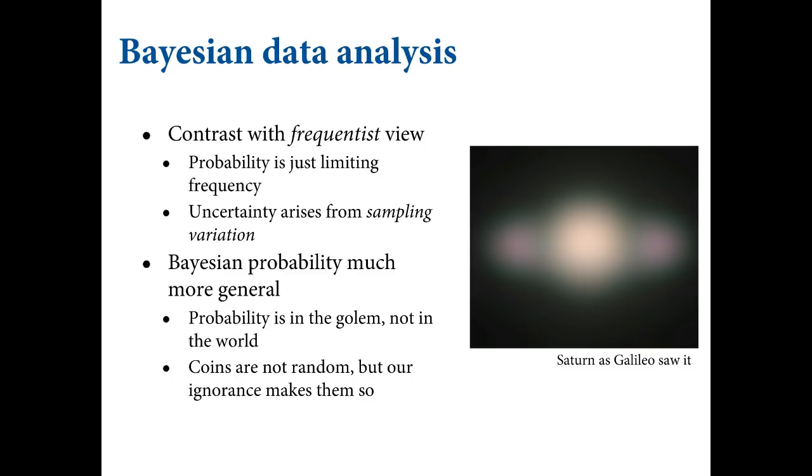Probability is in the golem. It's not in the world. If coin tosses, coins are not random. It's our inability to predict which side will land up that makes them random. We can use them as a randomization device because if you flip them fairly, then it's a chaotic system. They're so sensitive to initial conditions that they're essentially unpredictable. And that's why we call it random. But physics is deterministic, at least at the scale of coins. The randomness is a property of us and our knowledge.